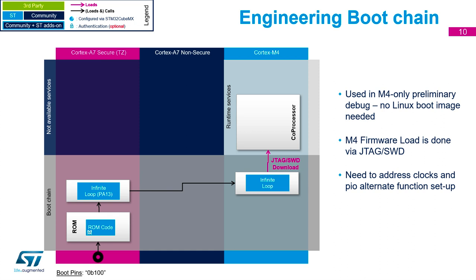This is fine as long as you're not doing any interaction with the Linux side — there's no Linux running at this point. If you have data coming into the M4 that you want Linux to process, you can't do that in this mode. Also, since clock control is done by the Cortex-A side, you will need to address the clocks and GPIO alternate functions separately, as your normal M4 code will not handle these.